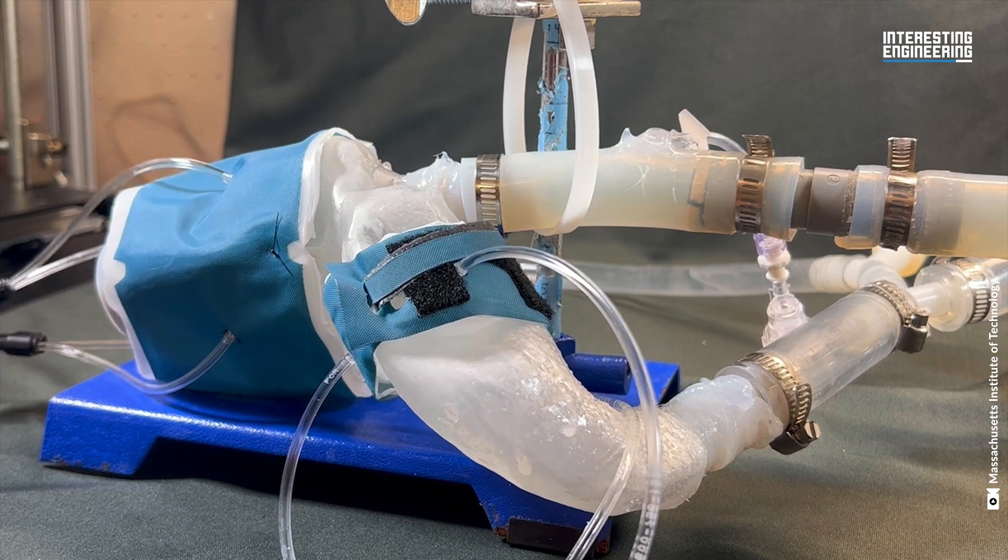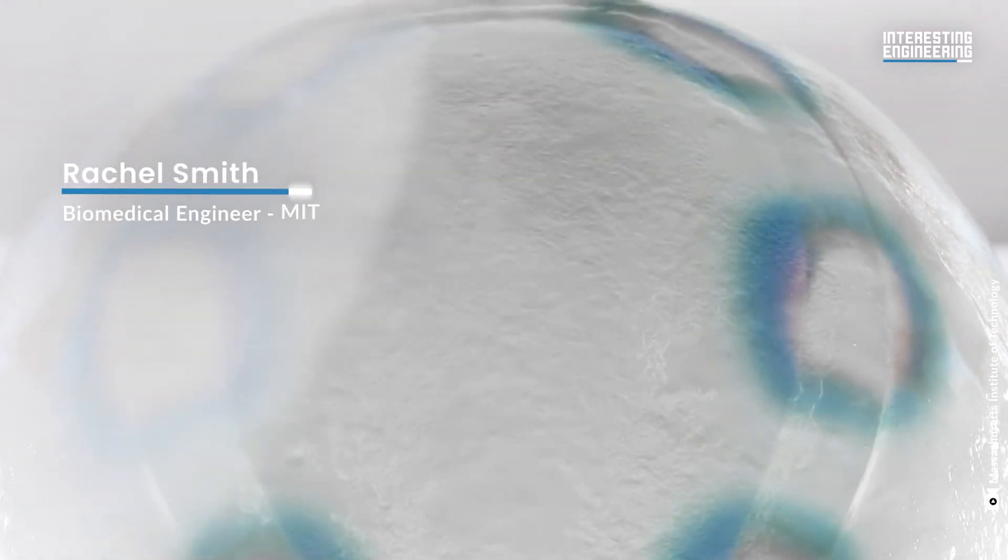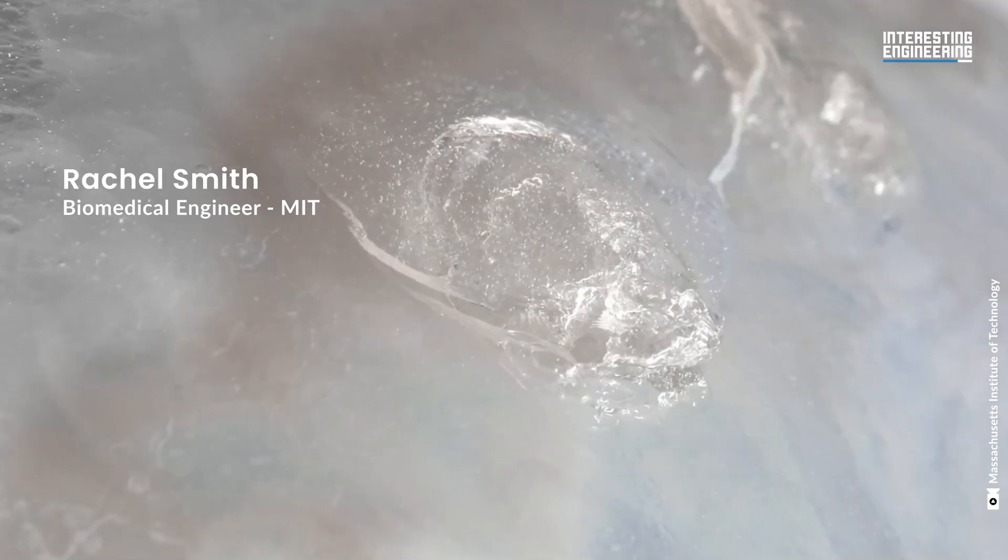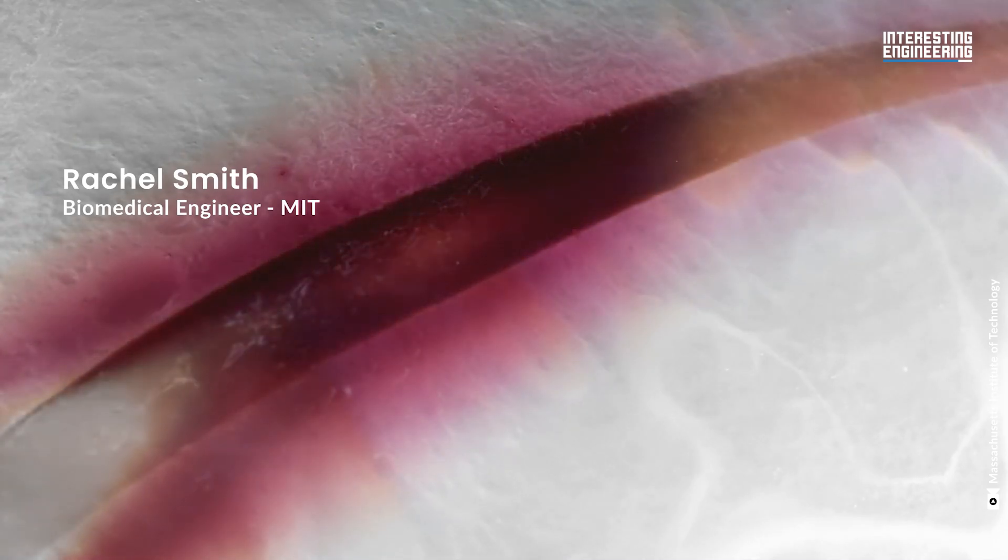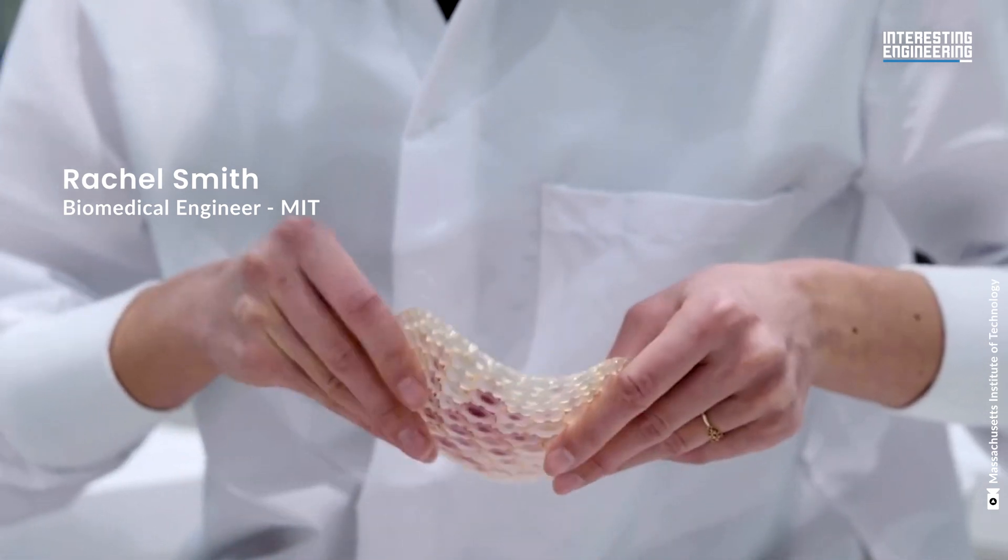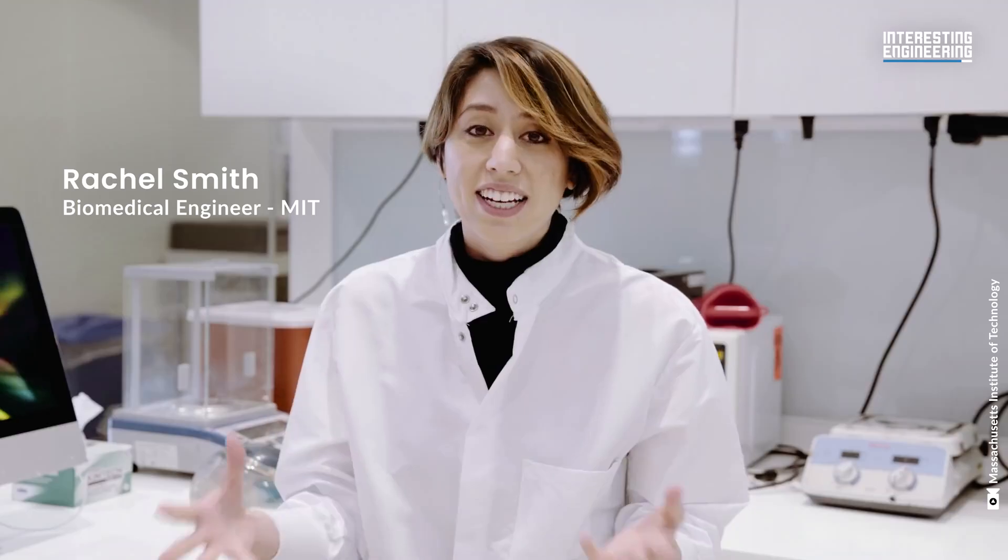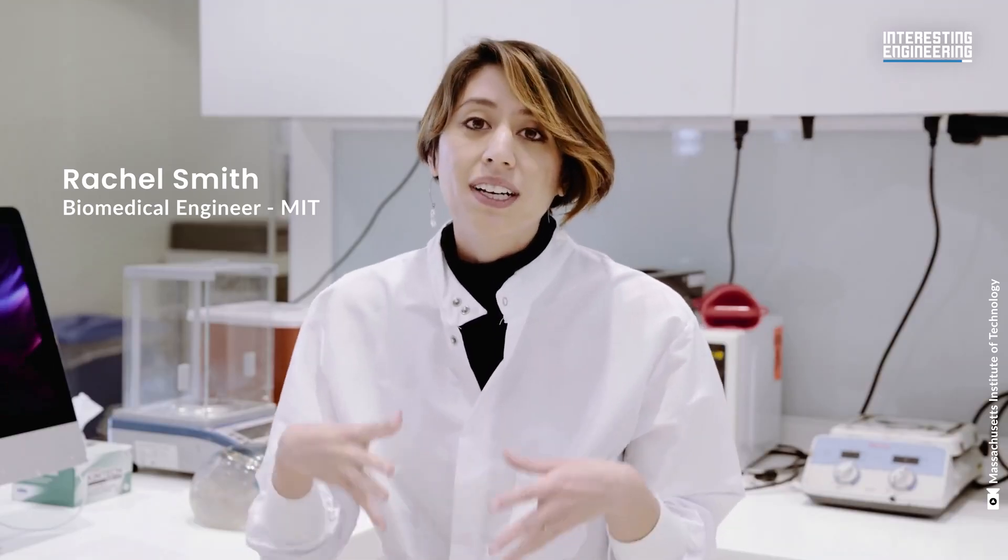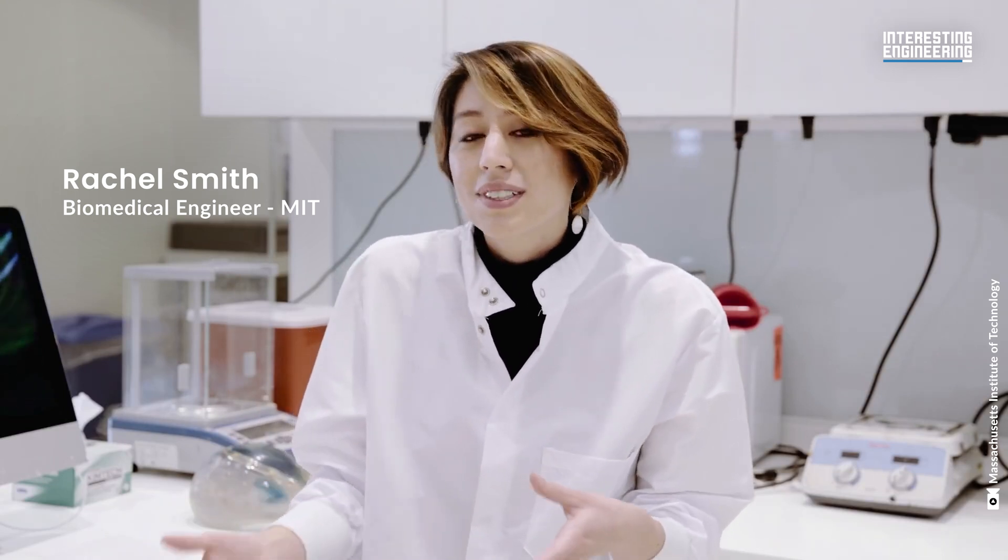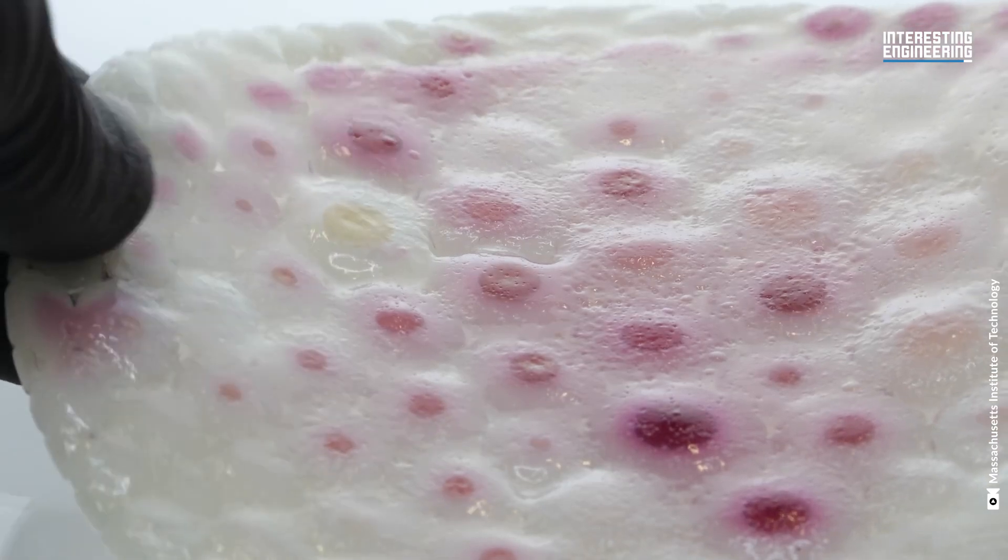One thing that we're doing differently is beginning to integrate chemical signals into the resins that we use. These chemical signals allow the 3D printed part to communicate to the cells that live on the surface of the 3D print. In that way, the 3D print has a pre-programmed control over the genes that are expressed on the surface of the 3D print.